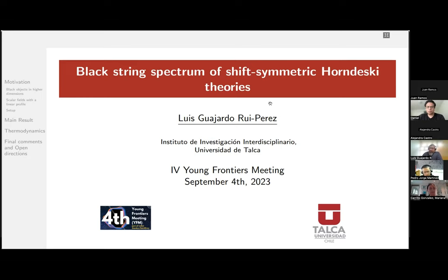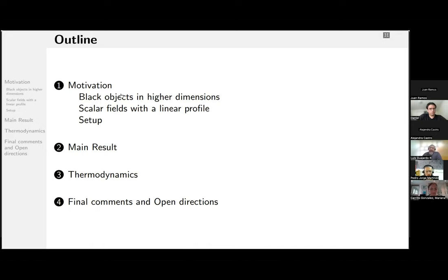So here's the outline of the talk. In the first minutes, I will try to motivate the subject, then go straightforwardly to the main result, which is that any shift-symmetric model admits a black string under some little constraint, but basically everyone is invited. And just to finish with a bit of thermodynamic analysis for the string, and finishing with some final comments and open directions that arise from our findings.